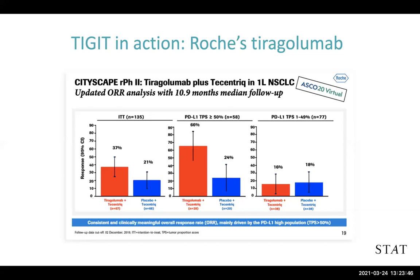Looking at the middle group — patients with high levels of PD-L1, the so-called super expressors who have more immunologically active tumors — there was a much larger difference in response rate: 66% in the combination arm versus 24% in the monotherapy arm. This is what generated a lot of excitement going forward. Of course, when you subgroup a study, the other group doesn't do as well — patients on the far right with lower levels of PD-L1 showed really no difference at all in response rates.